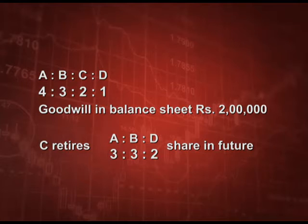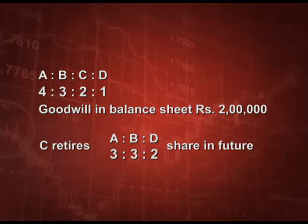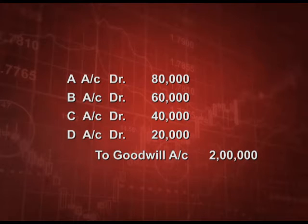Suppose there are four partners A, B, C, D sharing in the ratio of 4:3:2:1 and goodwill is existing in the balance sheet at rupees 2 lakh. C retires and A, B, D will share in the future in the ratio of 3:3:2. While solving this question, first we will write off the old goodwill of 2 lakh rupees in old ratio 4:3:2:1. The entry will be A account debit 80,000, B account debit 60,000, C account debit 40,000, and D account debit 20,000, and goodwill credited 2 lakh rupees. So the existing goodwill is finished off.